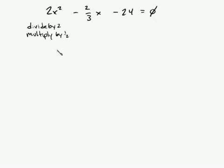So if you do this, you're going to get x squared minus 2 thirds times 1 half, which is 2 sixths or 1 third. So x squared minus 1 third x, and 1 half of 24 is 12, so minus 12 equals 0. That's the beauty of algebra.